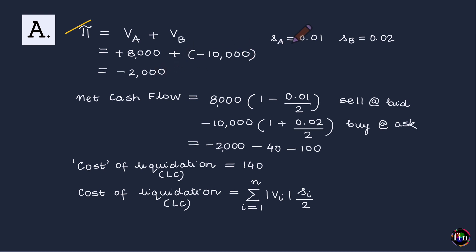For this question we assume the proportional bid-offer spread for stock A, S_A, is 0.01 (the mean), and for stock B, S_B, is 0.02. Now, if the investor goes to the market to liquidate this portfolio, let's calculate the net cash flow.